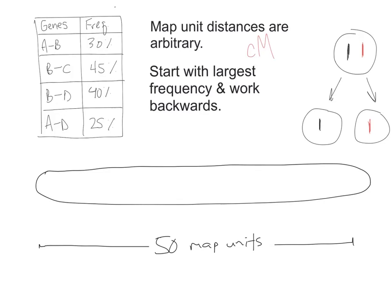I'm going to use red just so it's a little bit easier to see. Let me make my pen a little bit bigger. So if I look down my frequency tables, I got 30%, 45, 40, 25. So we're going to start with this 45%. If this chromosome is 50 map units long, that means that B and C are about as far apart as you can get. So we're going to put B right here and C way over there. And that takes care of that one.